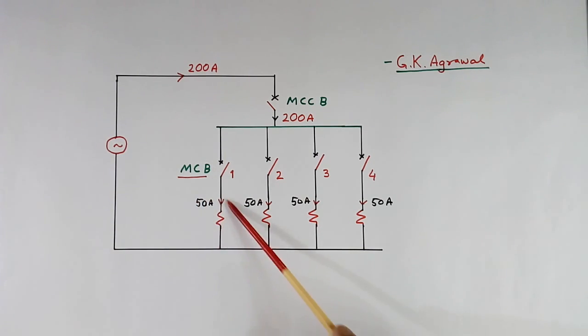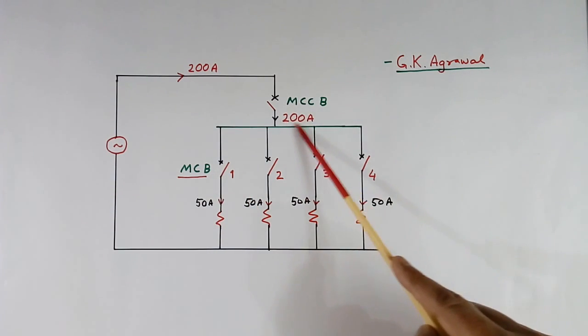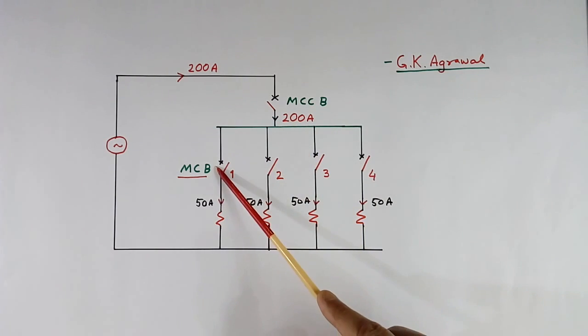Now suppose a fault happens here. This MCB will trip first. The MCCB will not trip; this is rated for very high current. So the MCB will trip, so there will not be any problem. All these three loads will work properly.